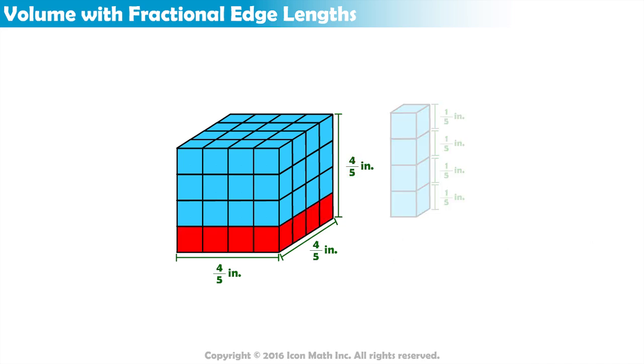The width and length of this cube are also formed with 4 smaller cubes. Since both the width and length are also 4/5ths of an inch, the width and length of each smaller cube is also 1/5th of an inch.